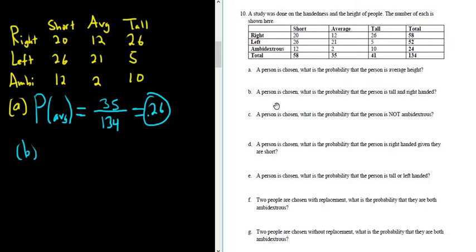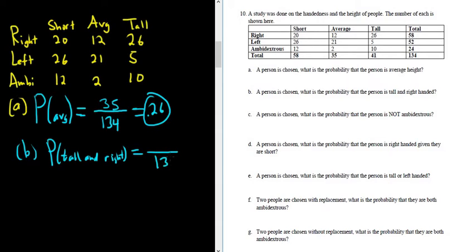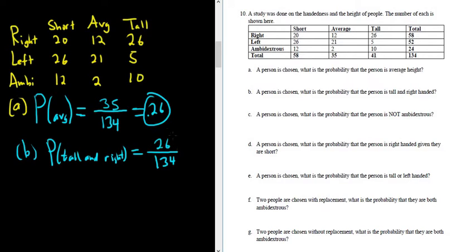Part B. A person is chosen — what is the probability that the person is tall and right-handed? So P(tall and right). We still have 134 on the bottom, and we just need to figure out how many tall right-handed people we have. Going to tall and where it meets right-handed — that's 26. So 26 over 134 is 0.194.